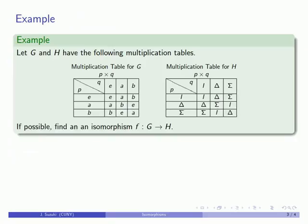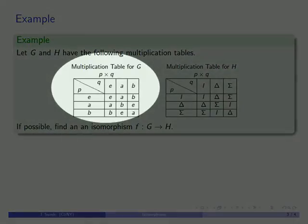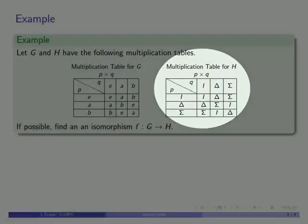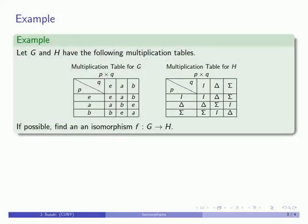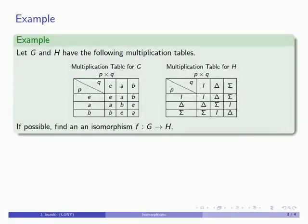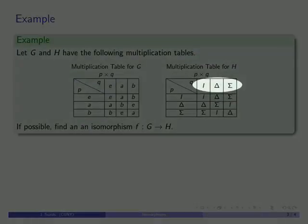For example, let's say I have two groups G and H, and I may have the following multiplication table for G and the following multiplication table for H. But my group elements are different. G has elements E, the identity, A and B. Meanwhile, H has group elements I, the identity, delta and sigma.